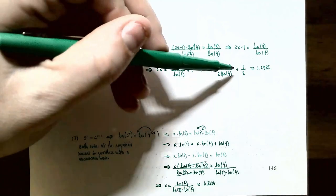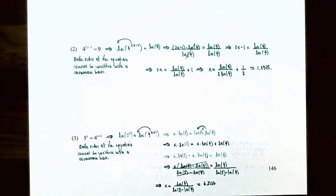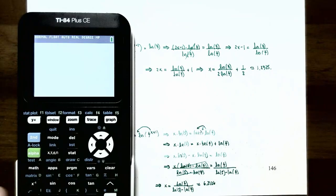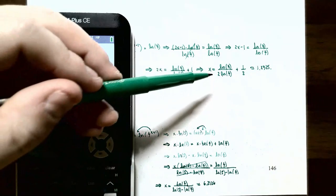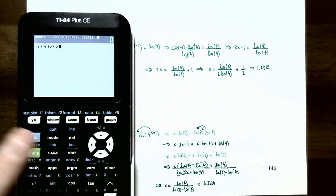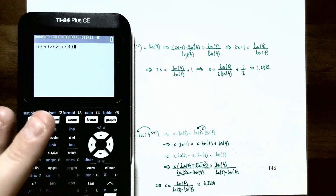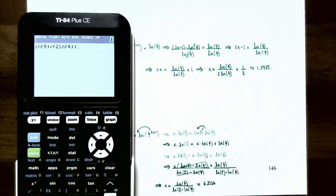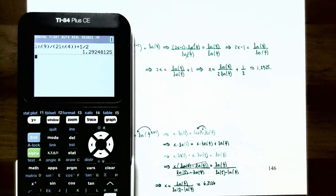Divide both sides by two: x equals ln(9) divided by the quantity two times ln(4), plus one half. Using a calculator — enclose the denominator two times ln(4) in parentheses — the answer is approximately 1.2925, or rounded to three decimal places, 1.293.